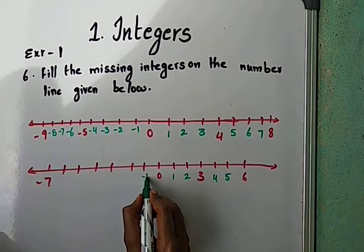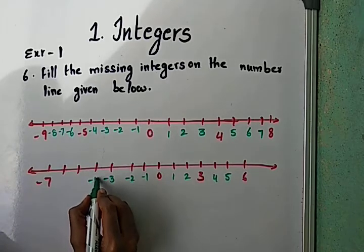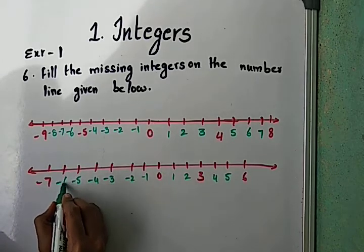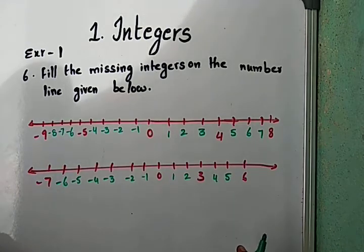Then 0. Before zero: minus 1, minus 2, minus 3, minus 4, minus 5, minus 6. This is the way to fill missing integers on a number line.